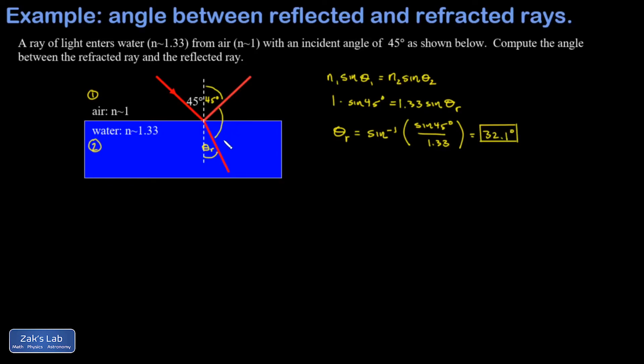Now I'll label the angle between the reflected and refracted rays as theta and we just have to do a quick calculation to find theta. I know that all three of these angles add up to 180 degrees, so 45...